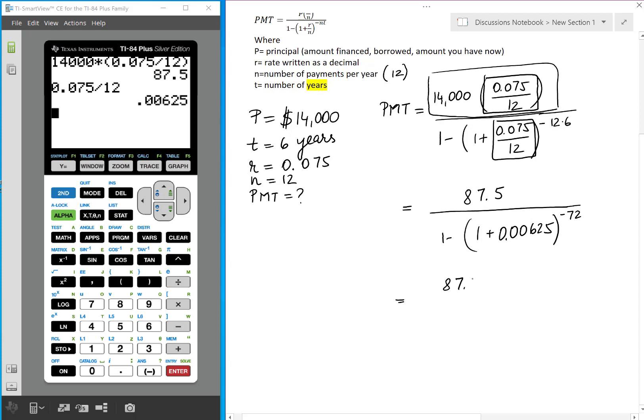So the numerator is 87.5. We keep it like that. 1 minus. We add these two together and that gives us 1.00625 raised to negative 72.